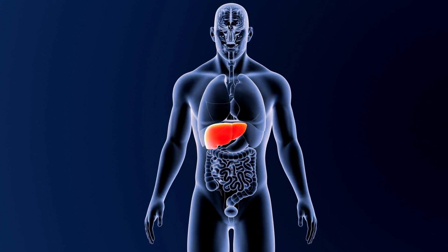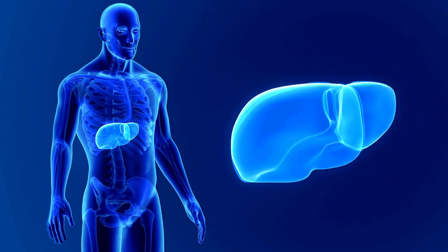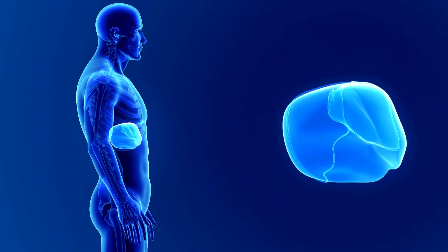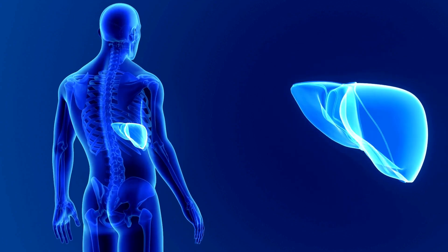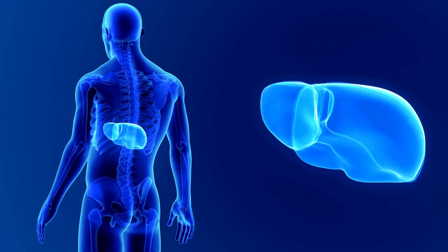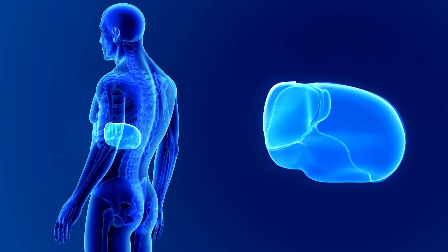Moreover, the caudate and quadrate lobes are separated by the porta hepatis, which transmits the nerves, ducts, and vessels into and out of the liver (May 2018).